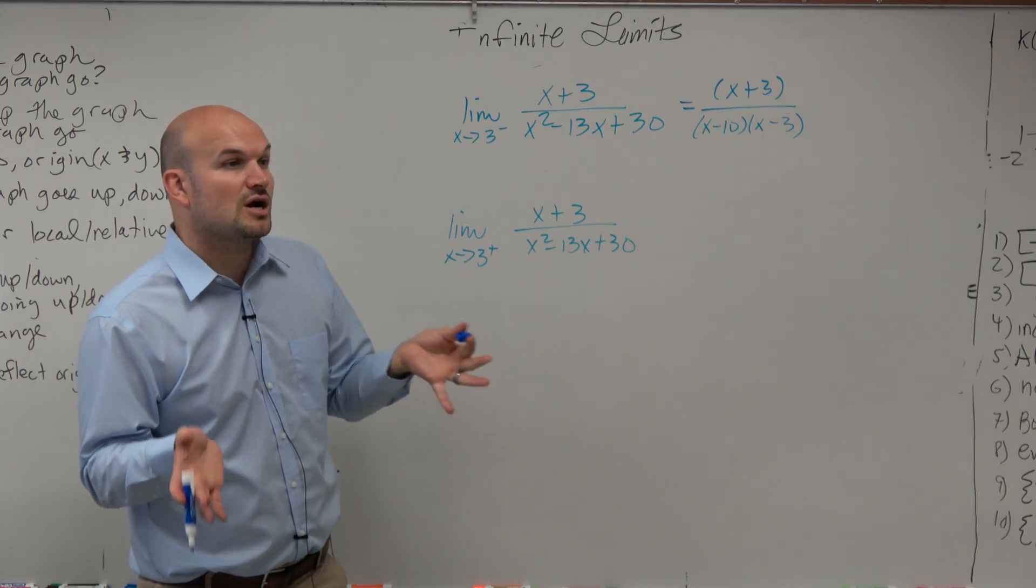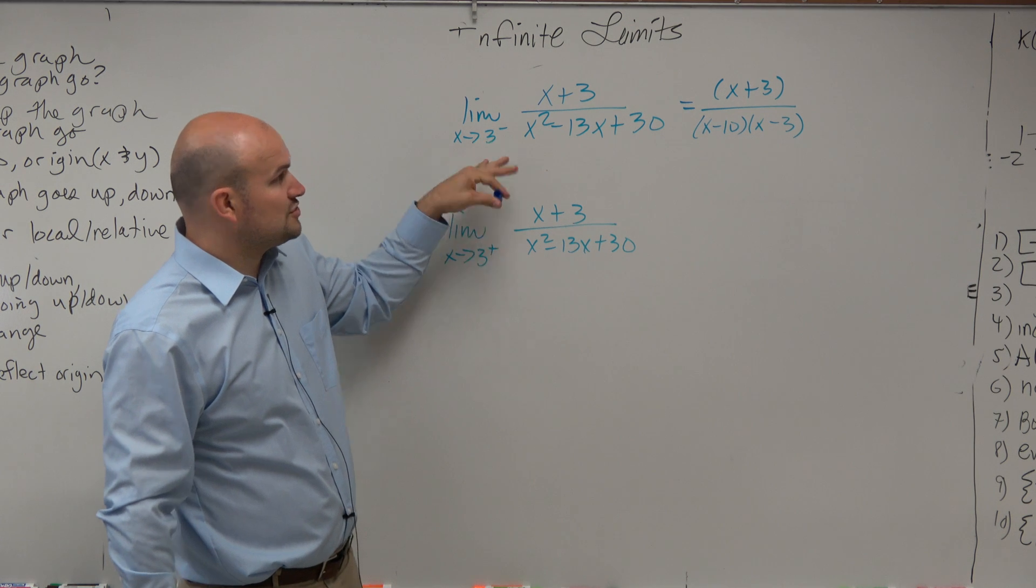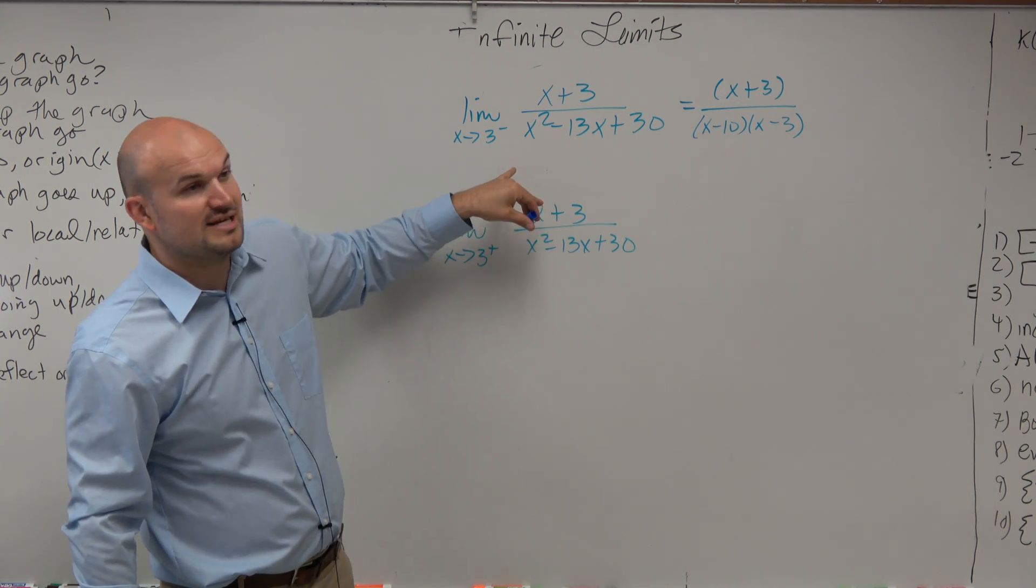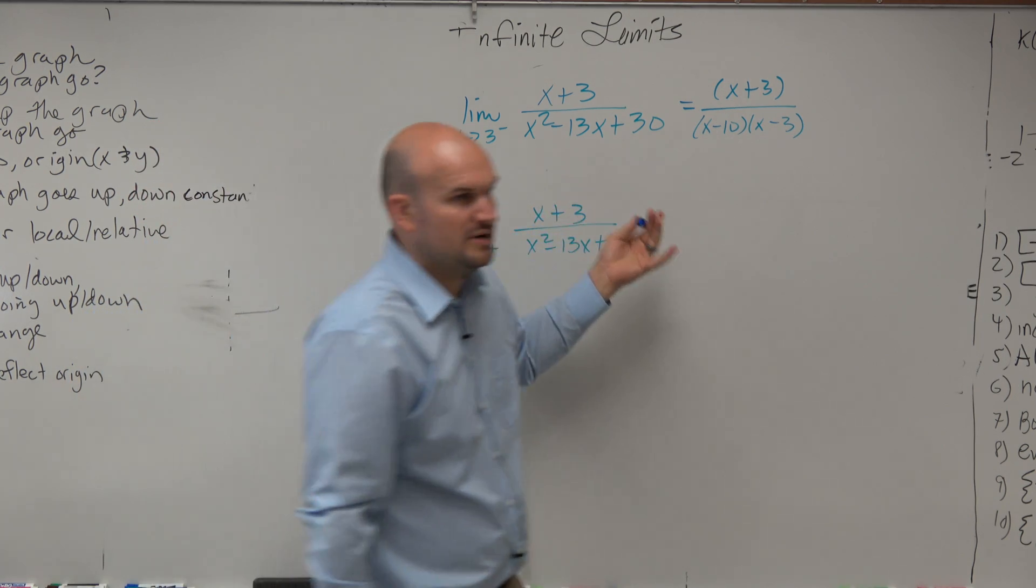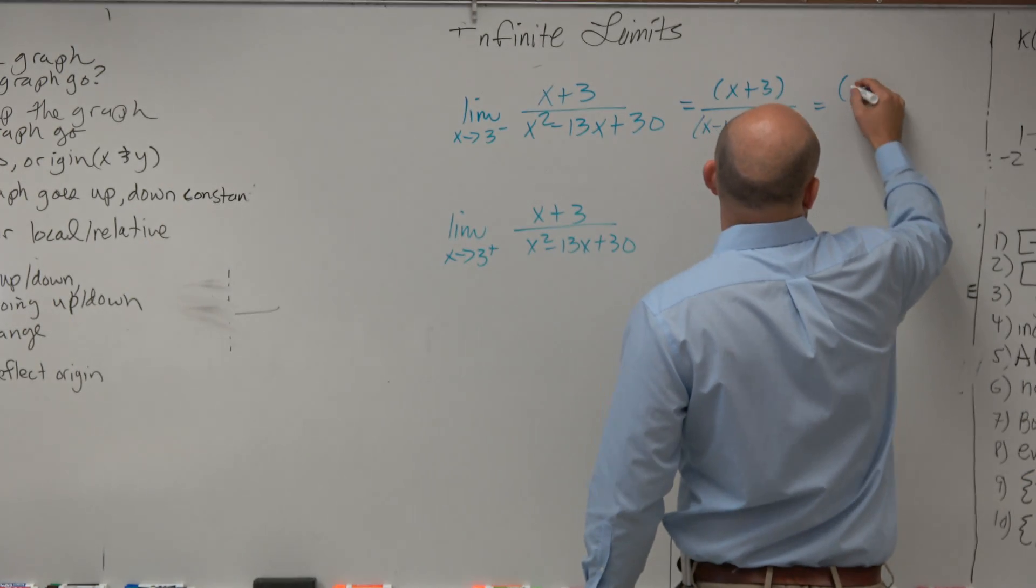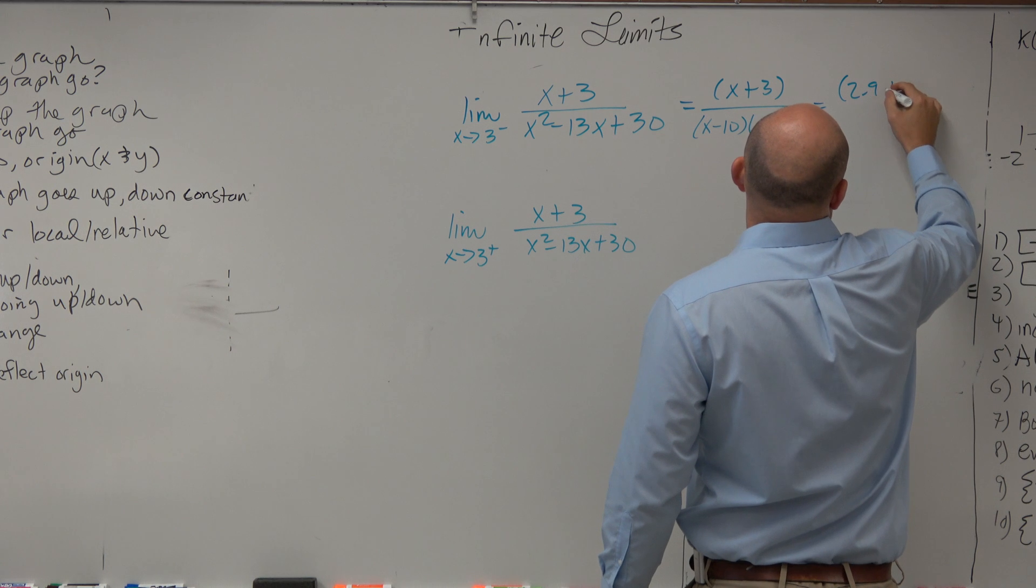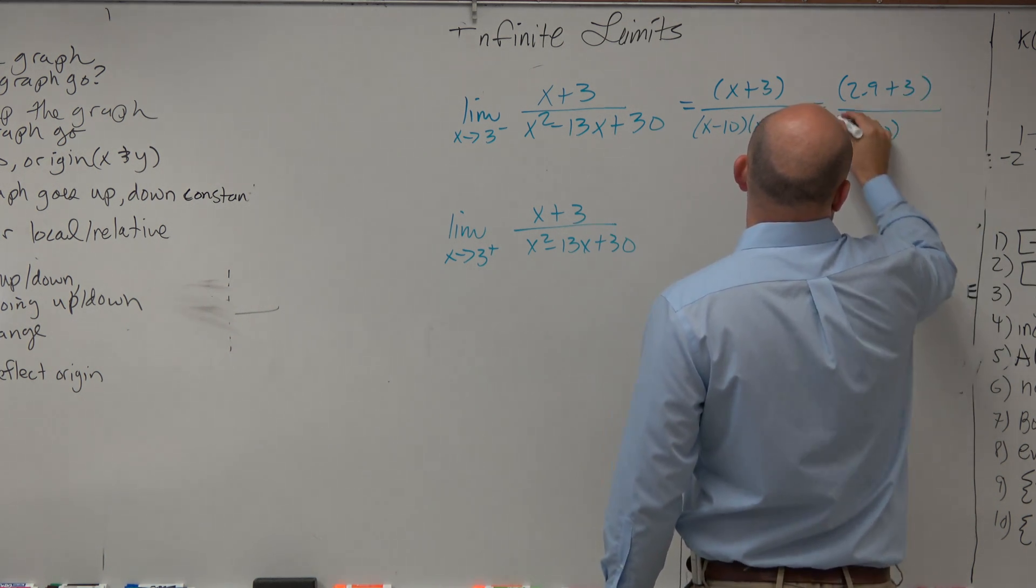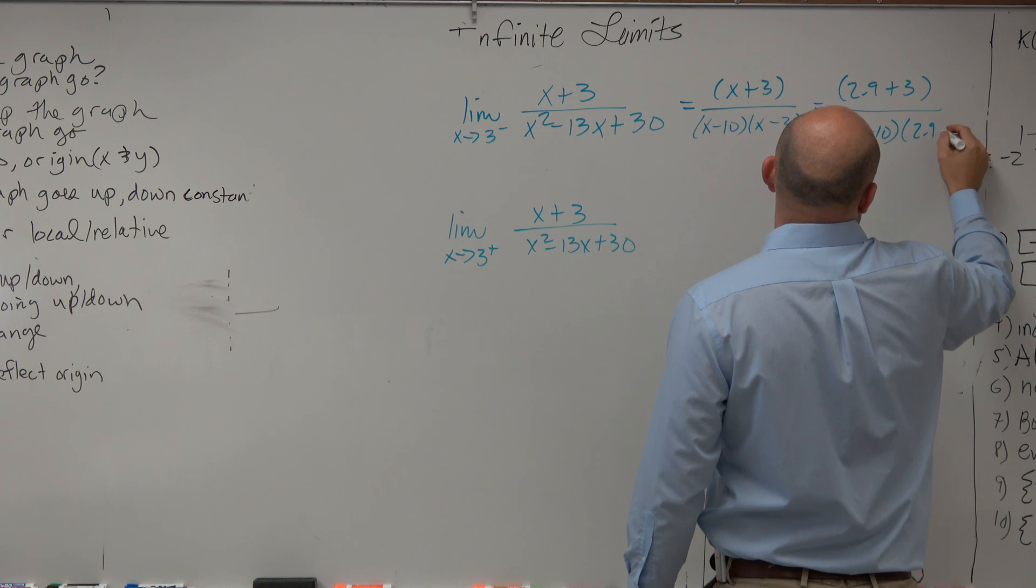So therefore, we need to use smaller numbers as we're getting closer and closer to 3 from the left. So a number that's really close to 3 from the left would be 2.9, right? And I'm just changing it up for each one. 2.9 plus 3, all over 2.9 minus 10 times 2.9 minus 3. Do you guys agree?